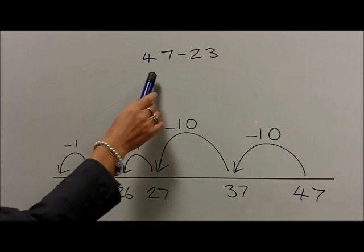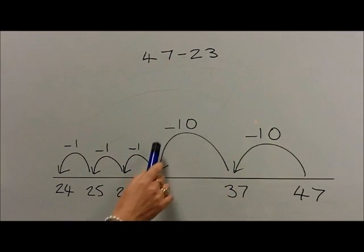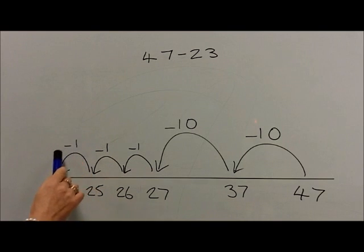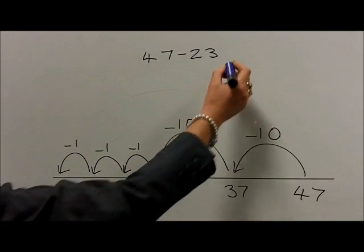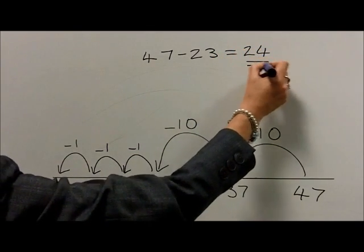So, 47 take 10, 20, 21, 22, 23 gets them to 24. So 47 take 23 is equal to 24.